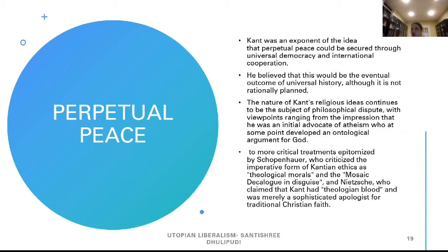Kant's most important book for us is Perpetual Peace, also used a lot in peace studies. Kant was an exponent of the idea that perpetual peace could be secured through universal democracy and international cooperation. He believed this would be the eventual outcome of universal history, although it is not rationally planned. The nature of Kant's religious ideas continues to be the subject of philosophical dispute, with viewpoints ranging from the impression that he was an initial advocate of atheism to more critical treatments by Schopenhauer and Nietzsche.